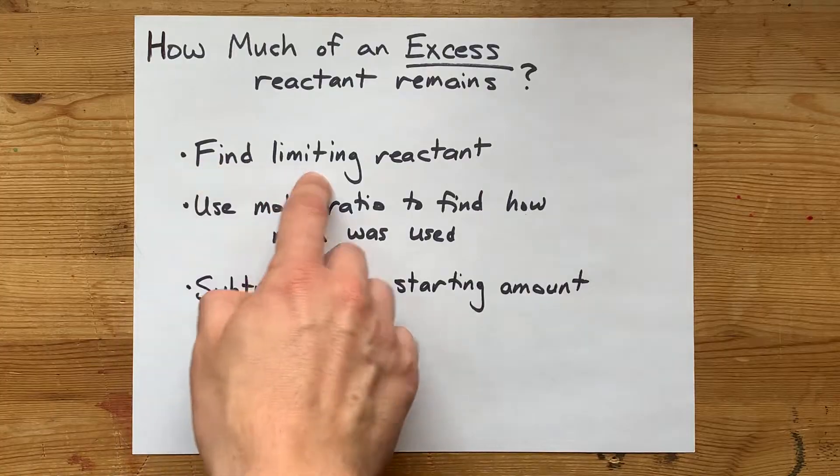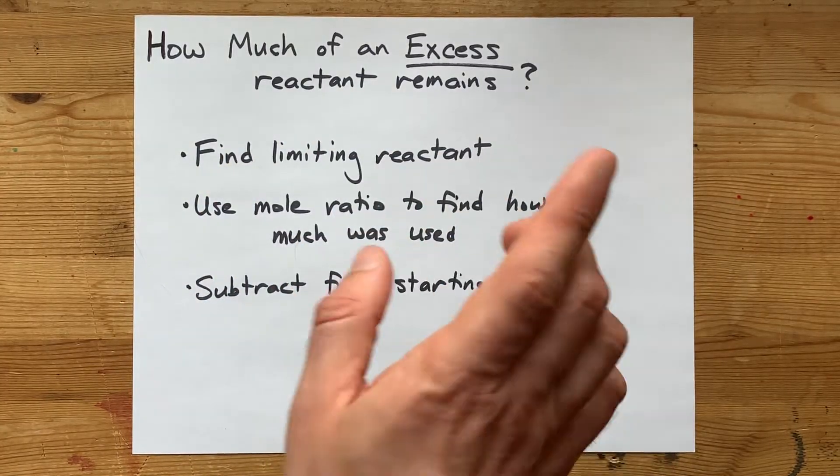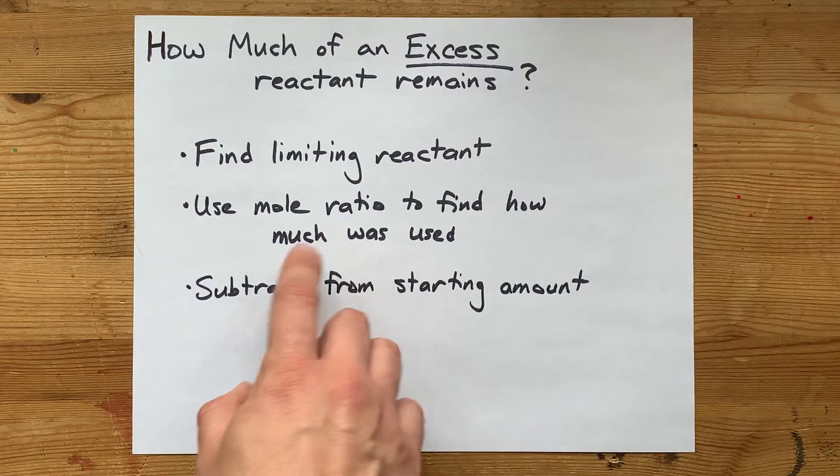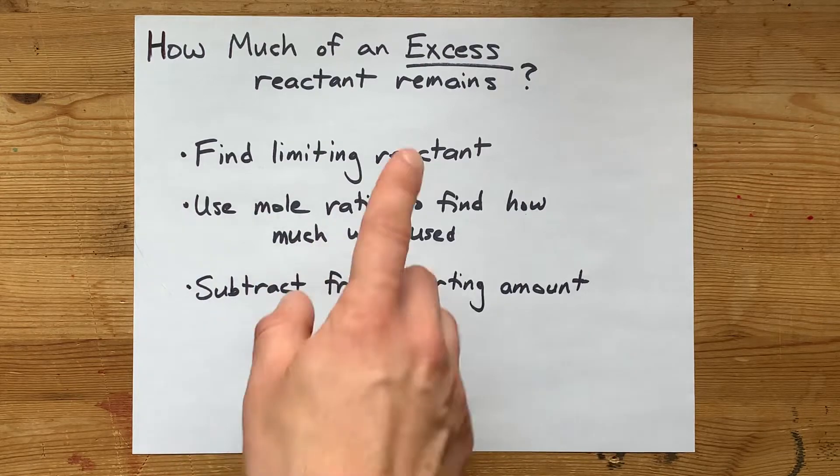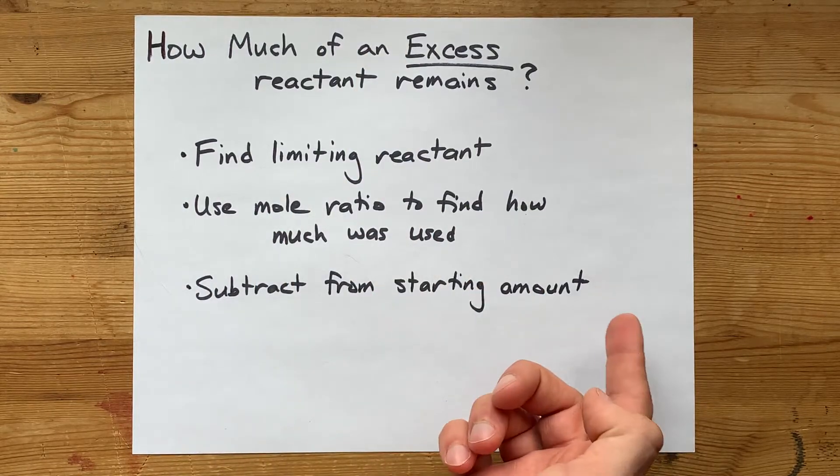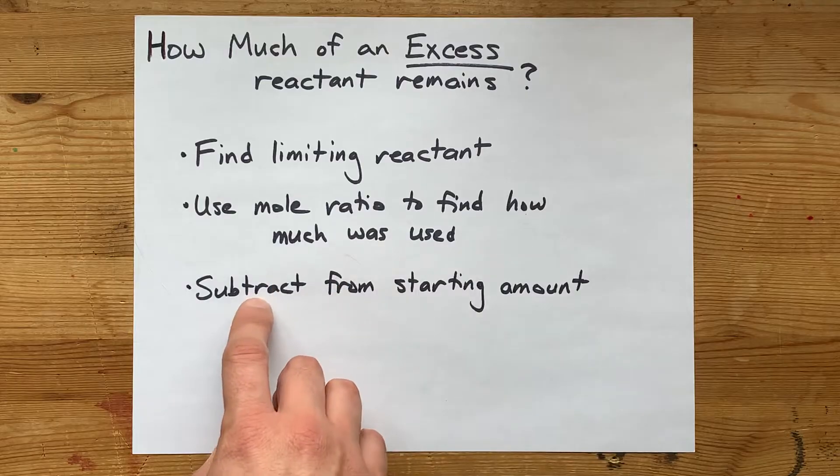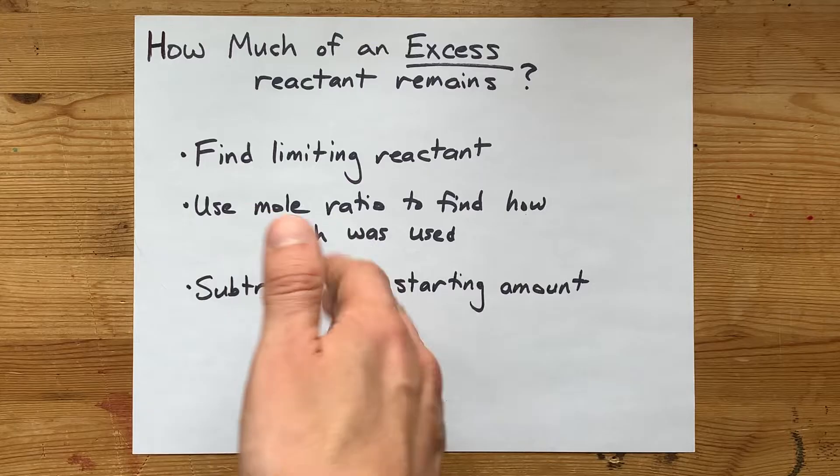Step one, find the limiting reactant, find what runs out first. Then use a mole ratio to figure out how much of the excess reactant was actually used up. Then you can take that amount away from the starting amount to get how much was left over.